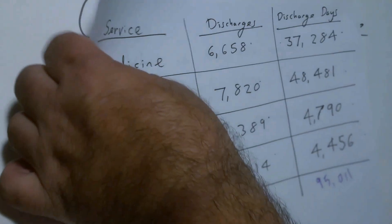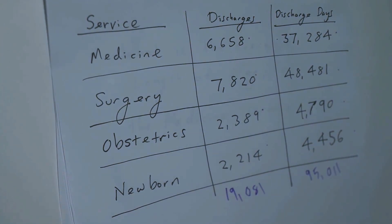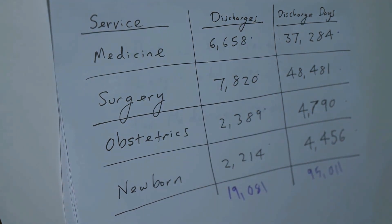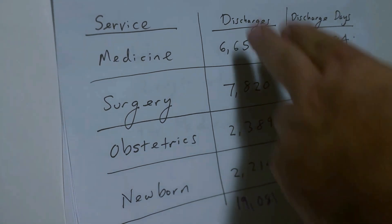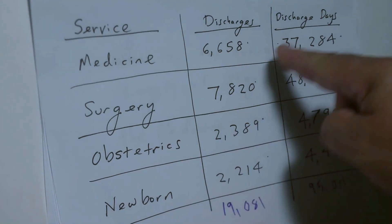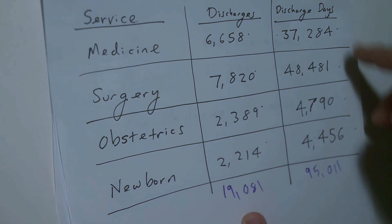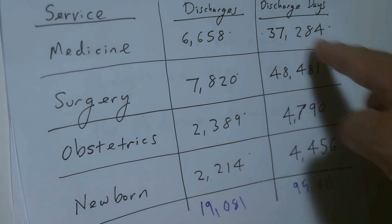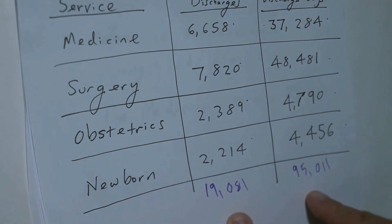Let's look at this data. On the left-hand side, as you can see, we have the services listed: medicine, surgery, obstetrics, and newborn. Next to it we have the number of discharges for each of these during the period in question, and then we have the number of discharge days on the far right for each of these. I've taken the time to total them at the bottom.